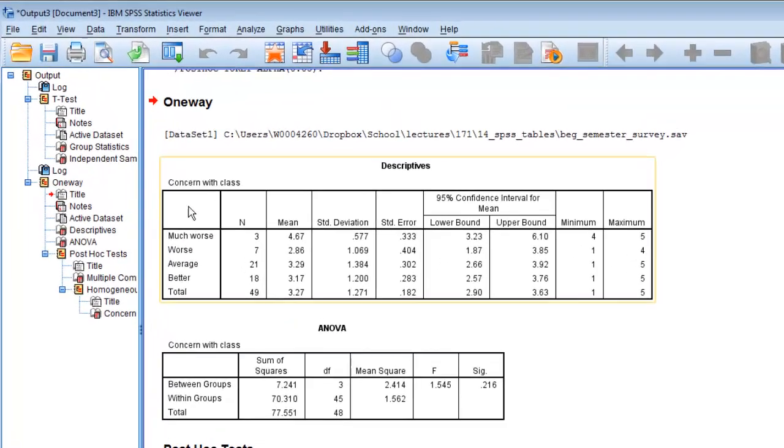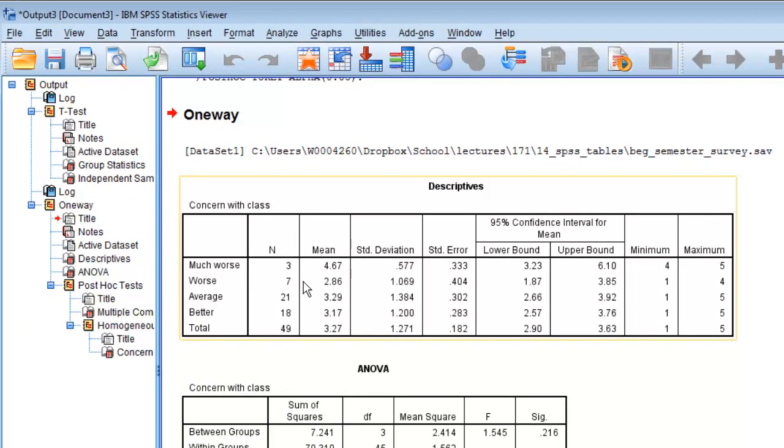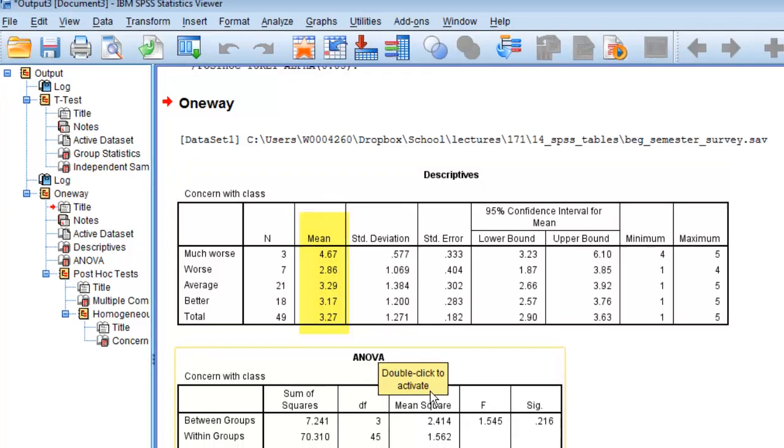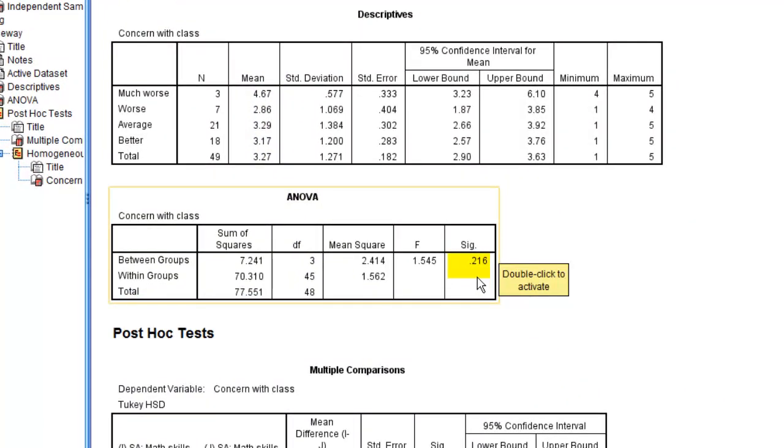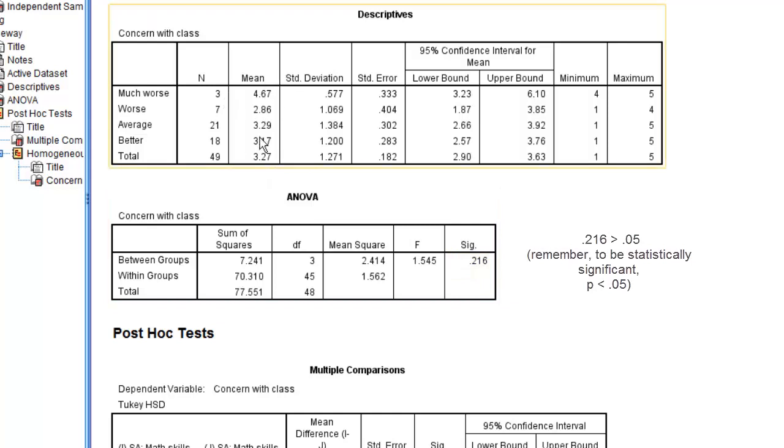So here's your one-way ANOVA table, the descriptives, and it tells you the mean for the people who said much worse on their variable for concern with the class. So those people who assess themselves as much worse than most people with their math skills ended up having higher means than those people who assess themselves as better than average. So now we look here at the significance. And the significance is greater than 0.05. So that's telling you that this is not a significant difference. This is likely due to the fact that we only have 49 people in the sample, a small sample size.